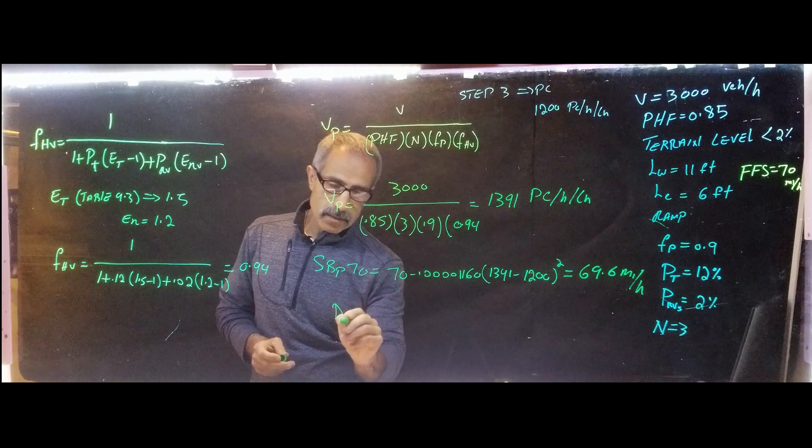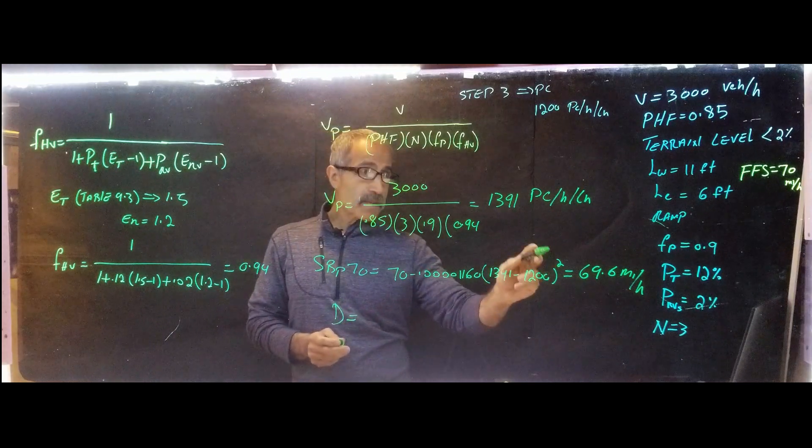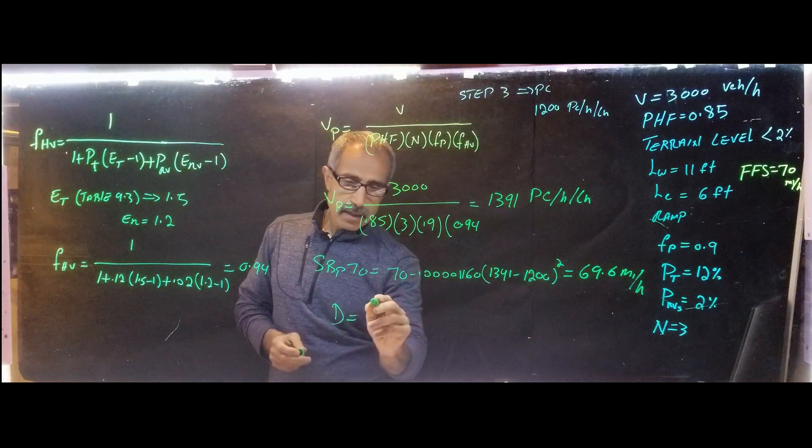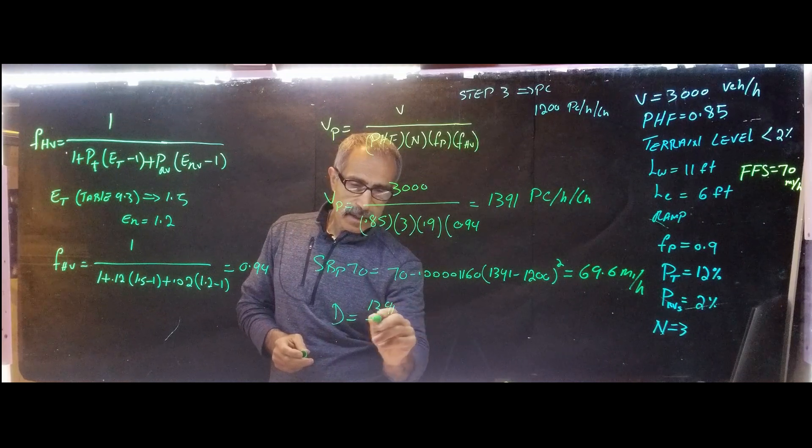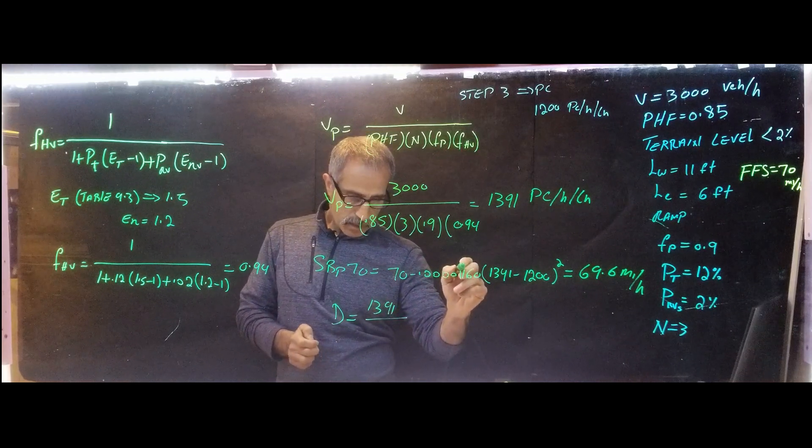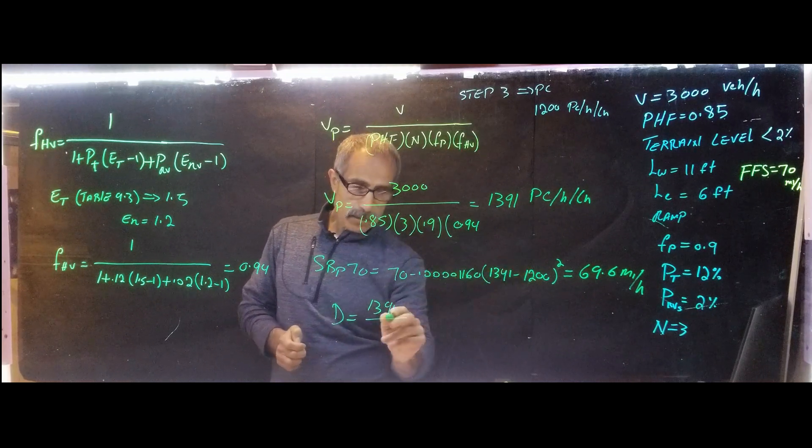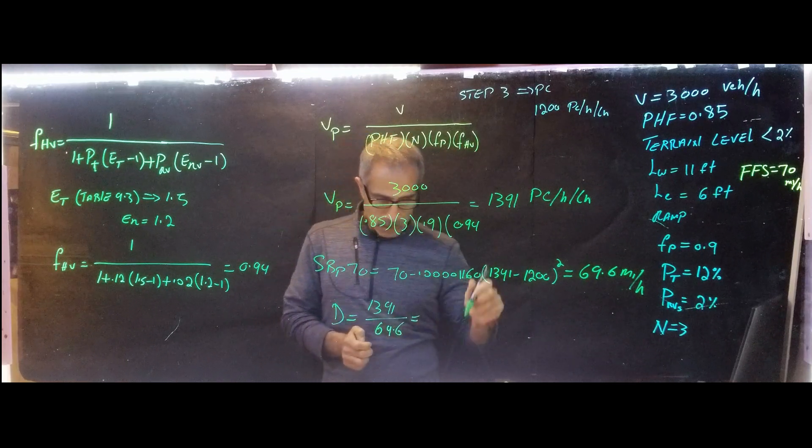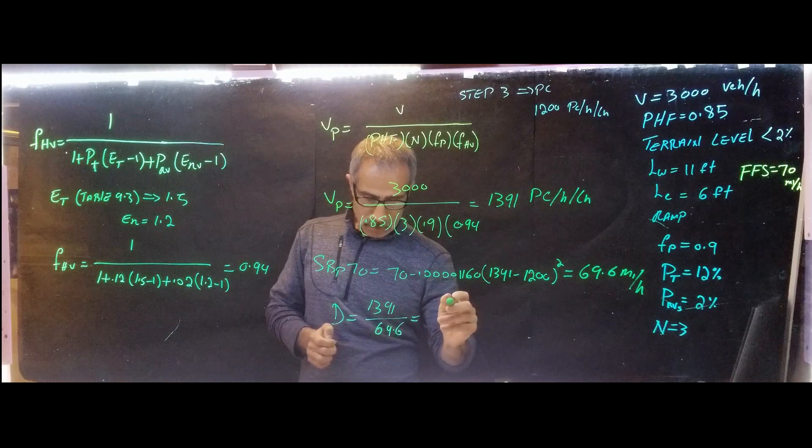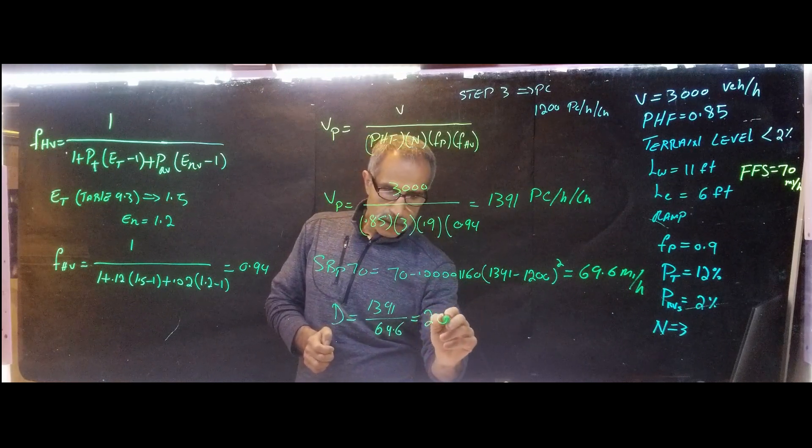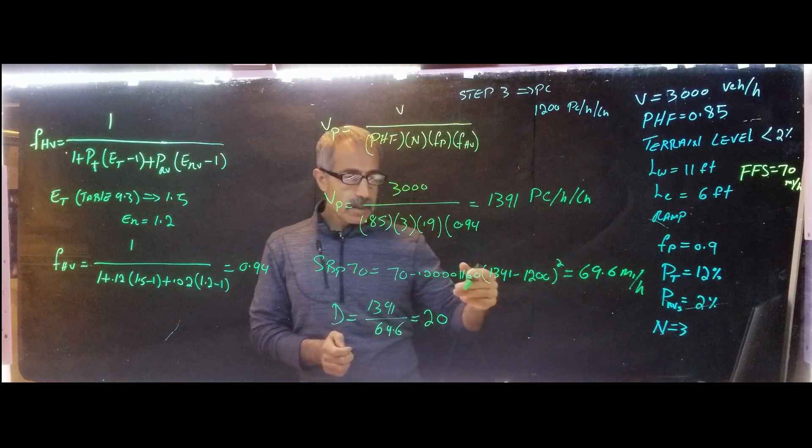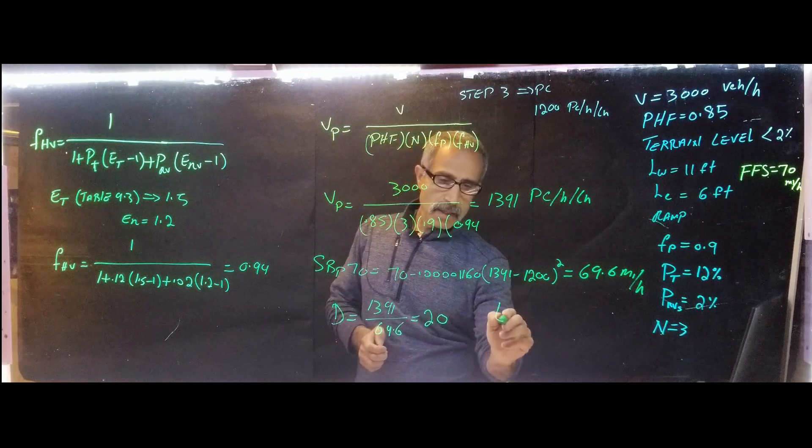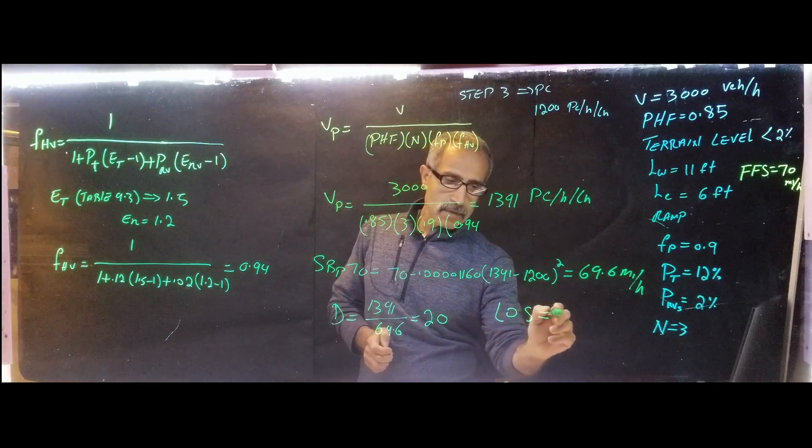Step six is density, which is equal. We have 1391. All right. And divide that by, what was it? 69.6. So we're going to come out close to 20. And then when we look at the chart, it's going to be LOS of C.